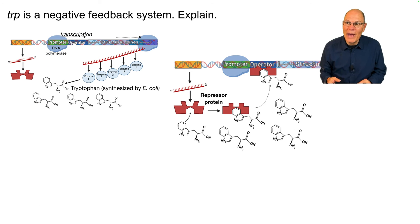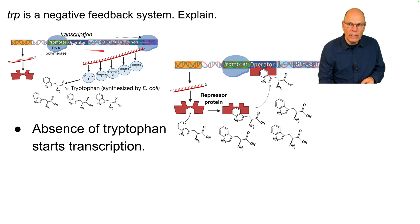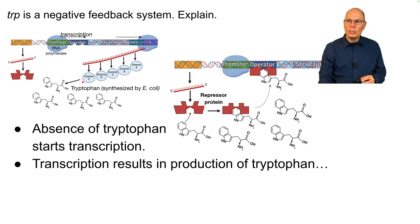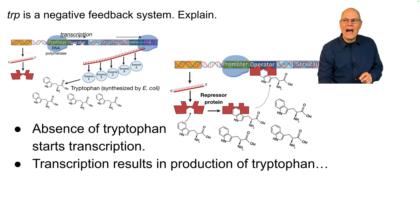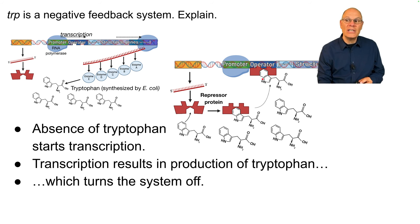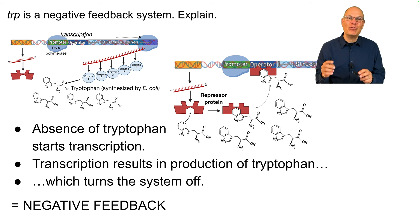You can say the same thing about the trp operon — it's also a negative feedback system. The absence of tryptophan starts transcription; RNA polymerase transcribes the structural genes, producing enzymes that synthesize tryptophan. That tryptophan builds to a high enough concentration to bind with the repressor protein, changing its shape, allowing it to bind at the operator and shut down transcription. Both trp and lac are negative feedback systems, even though lac is inducible and trp is repressible.